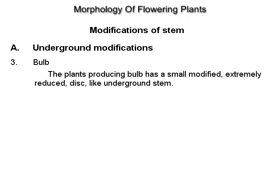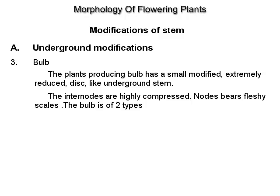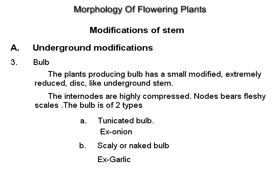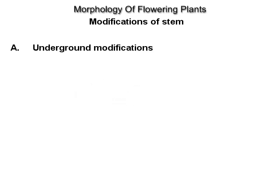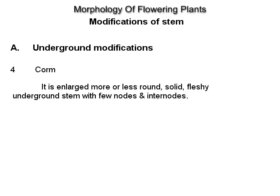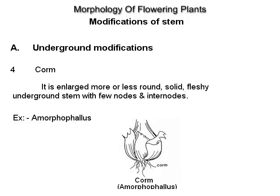Bulb: the plant producing a bulb has a small, modified, extremely reduced, disc-like underground stem. The internodes are highly compressed and the nodes bear fleshy scales. The bulb is of two types: tunicated bulb, example onion, and scaly or naked bulb, example garlic. Corm: it is an enlarged, more or less round, solid, fleshy underground stem with few nodes and internodes, example Amorphophallus.